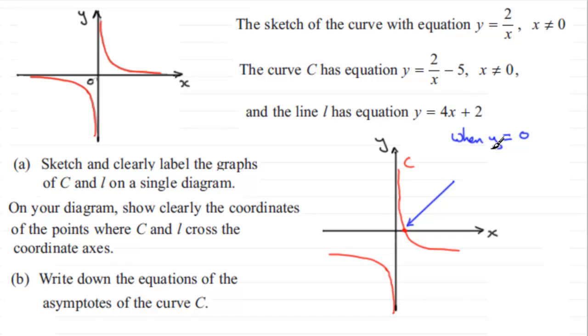If we add 5 to both sides, we therefore have 2 over x equals 5. Multiply both sides by x and you've got 2 equals 5x. And divide now both sides by 5 and you've got x equals 2 fifths. So you can see then that this crosses at the point where x equals 2 fifths. We'll just pop that in there, 2 fifths.